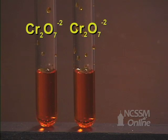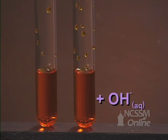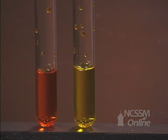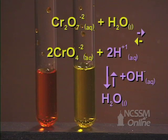We have two test tubes containing a solution of potassium dichromate. We will add some 6 molar sodium hydroxide to one of the tubes. We notice that the solution turns yellow, which indicates that the equilibrium has shifted from the dichromate to the chromate. The sodium hydroxide removes hydrogen ion from the solution, causing the reaction to shift in the forward direction.